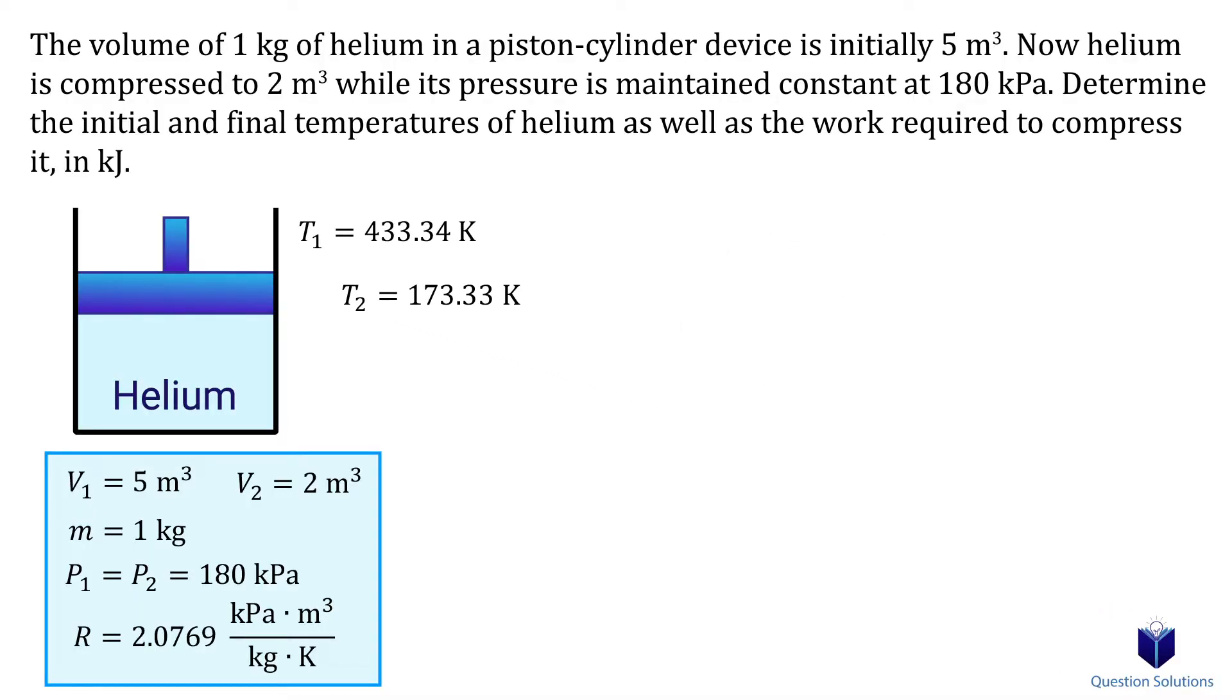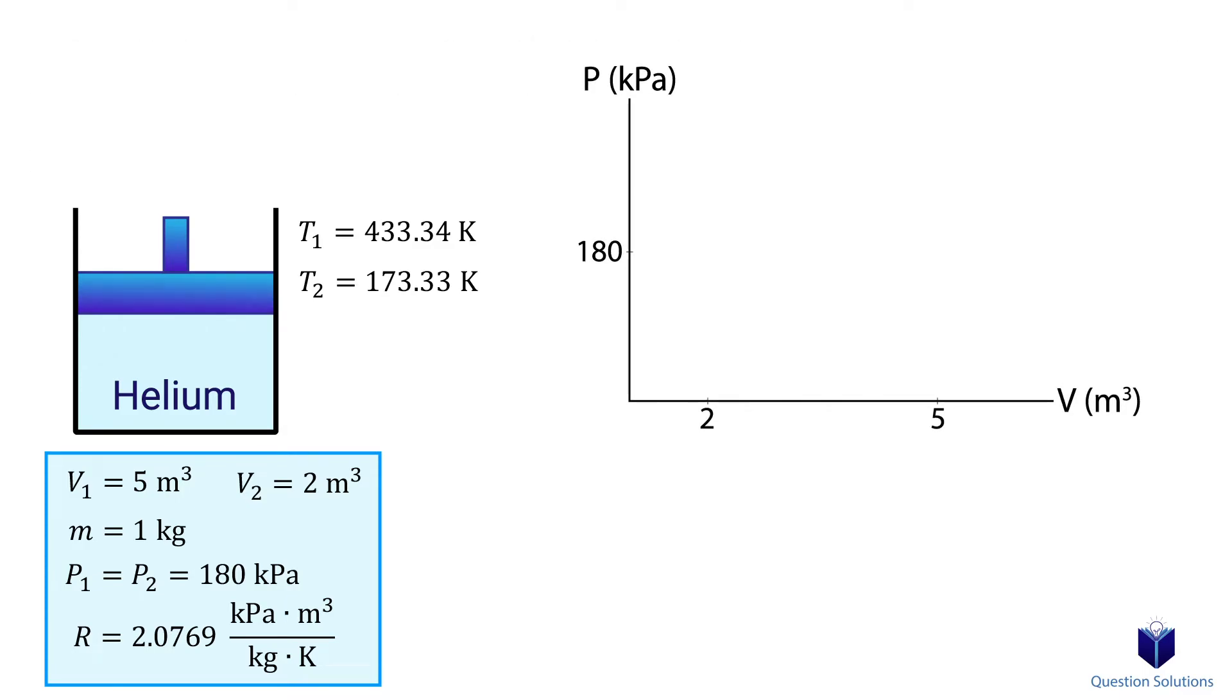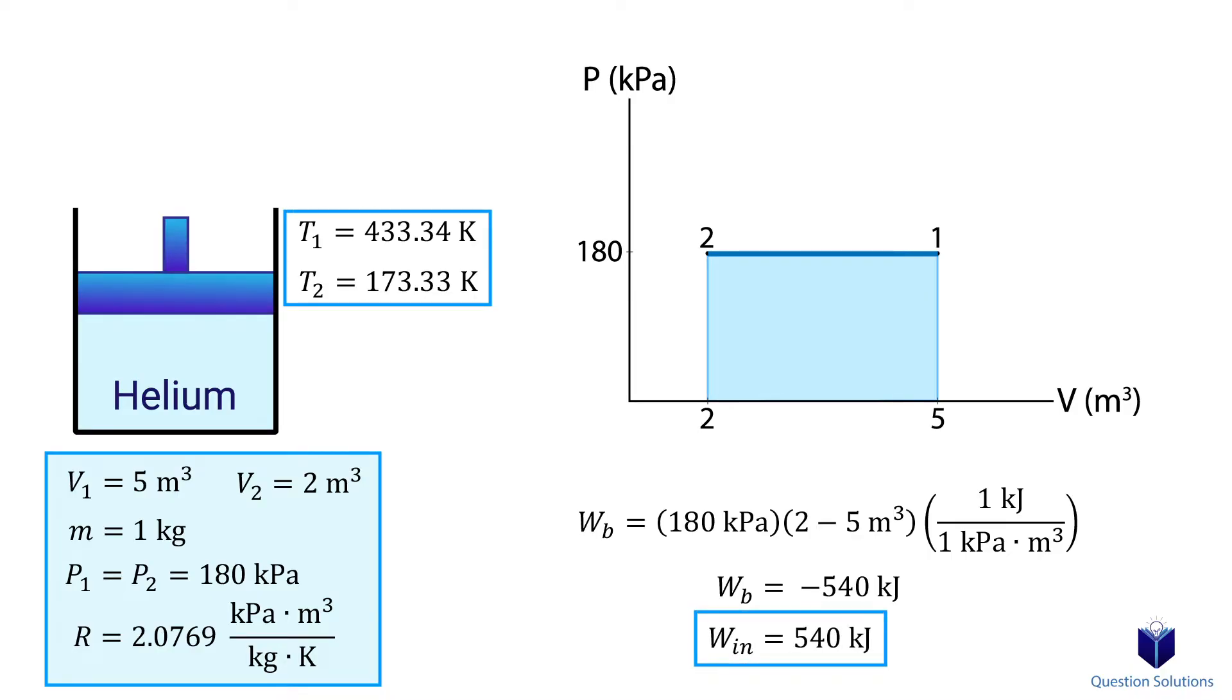The last step is to figure out how much work was required to compress the helium. Let's draw a pressure versus volume graph. So the initial state starts right here, with a volume of 5 cubic meters and a pressure of 180 kilopascals. The pressure stays constant, which means it's a straight line to right here, where our final volume is 2 cubic meters. To find the work, all we need to do is find the area under the graph. So that's 180 multiplied by 2 minus 5. We also need a unity conversion ratio since we want our answer in kilojoules. We got a negative answer, which simply means that this is a compression process. In other words, volume is decreasing and it's a work input.